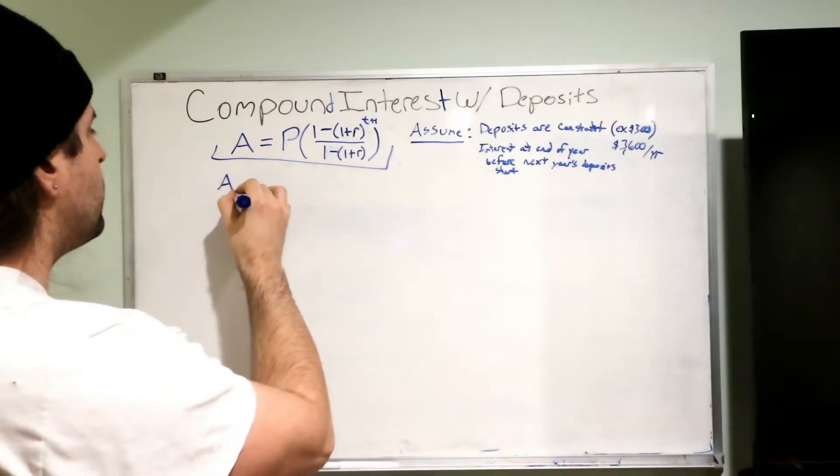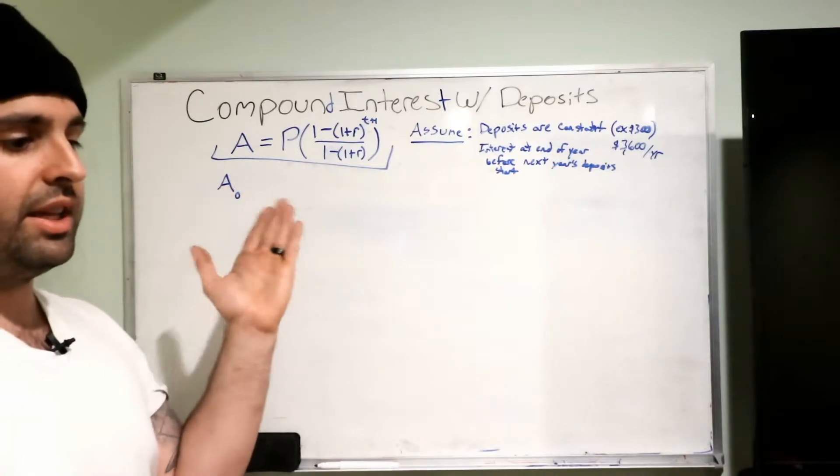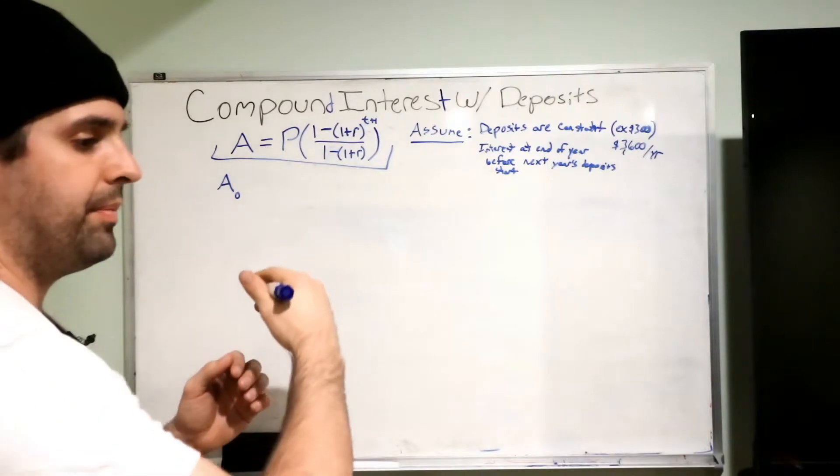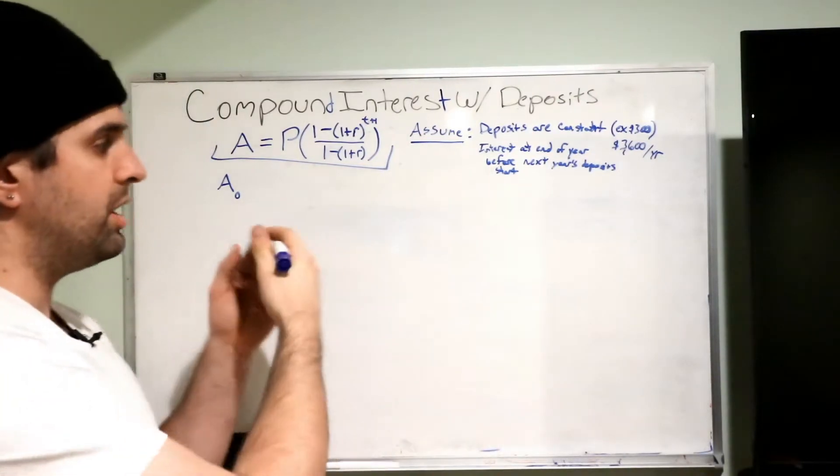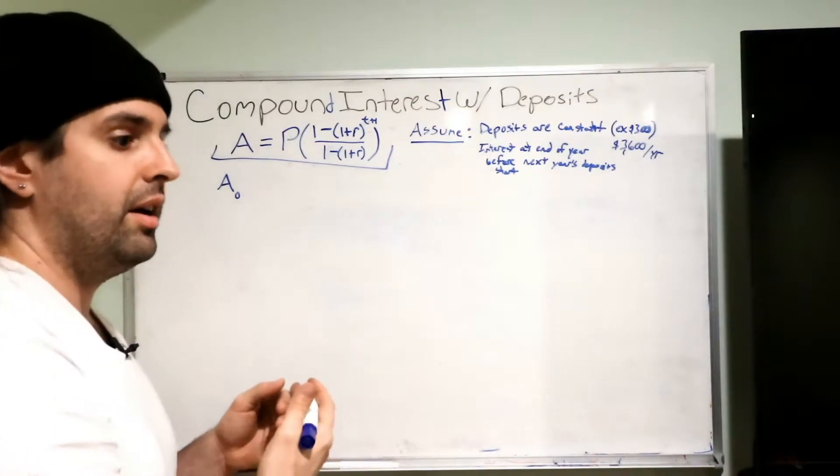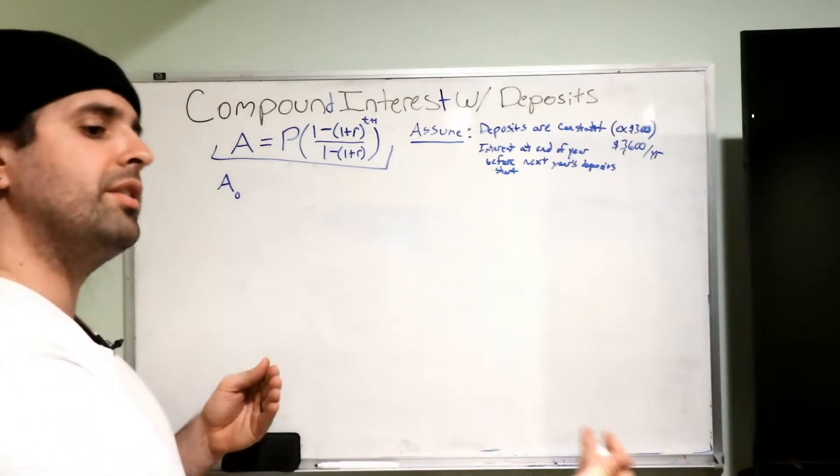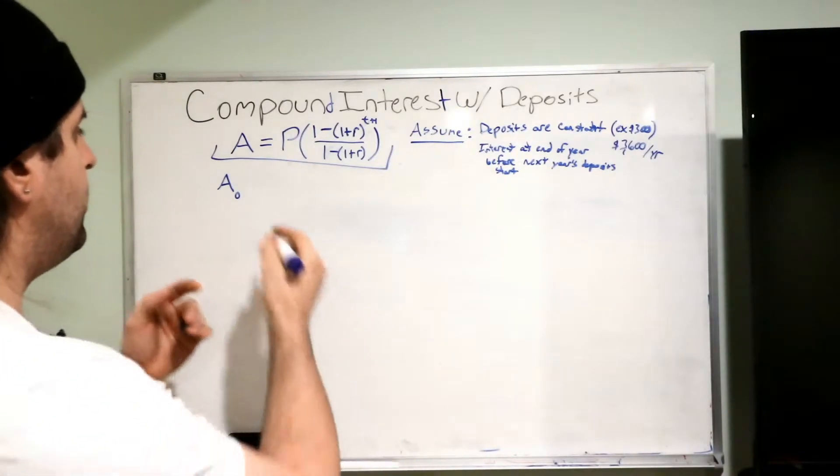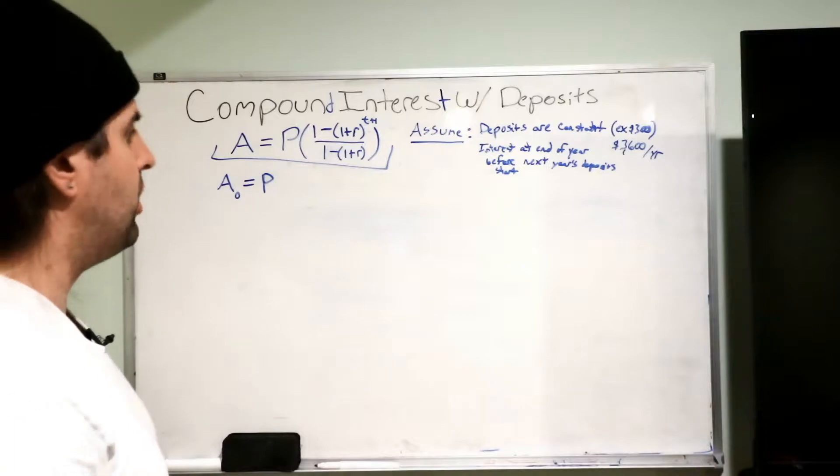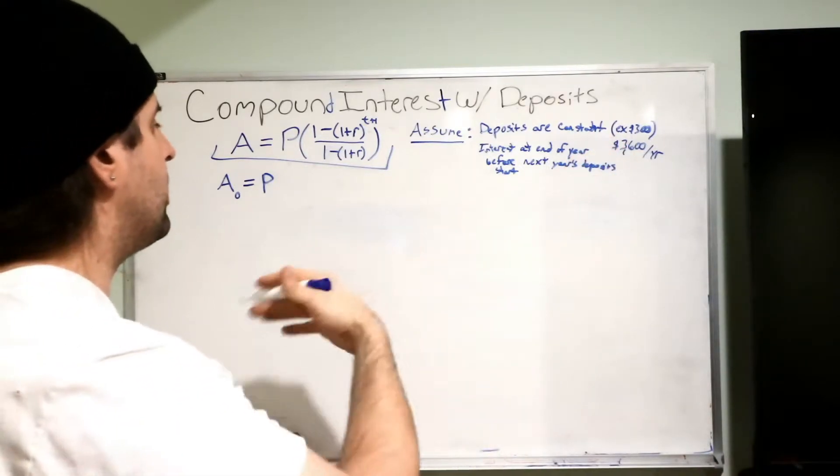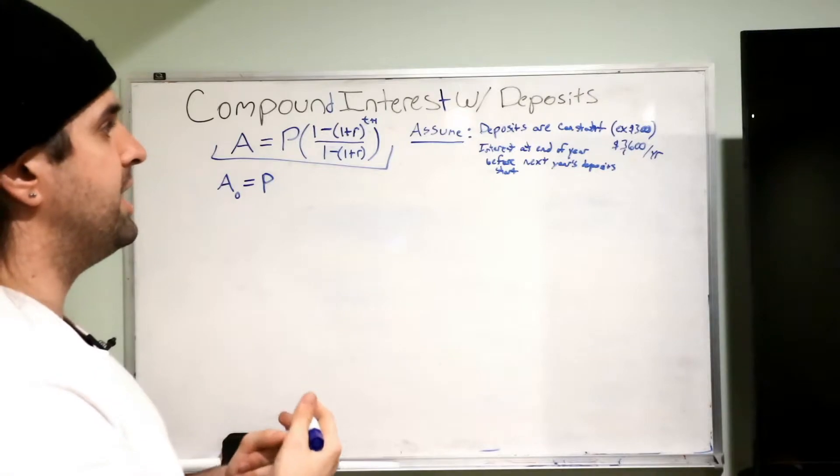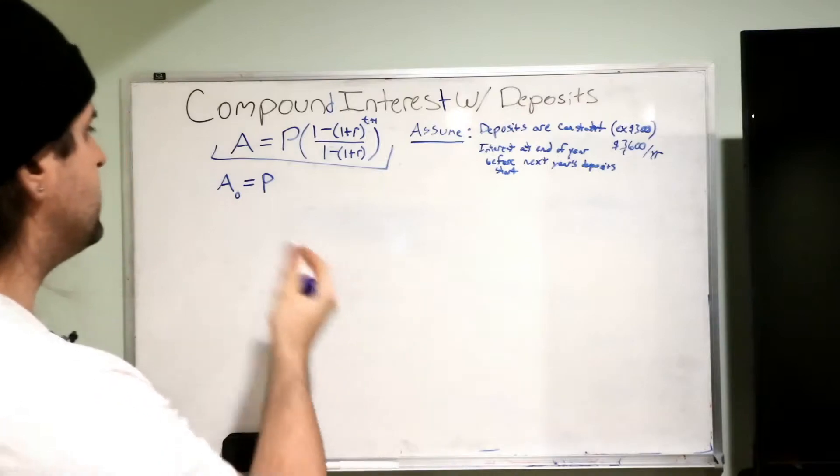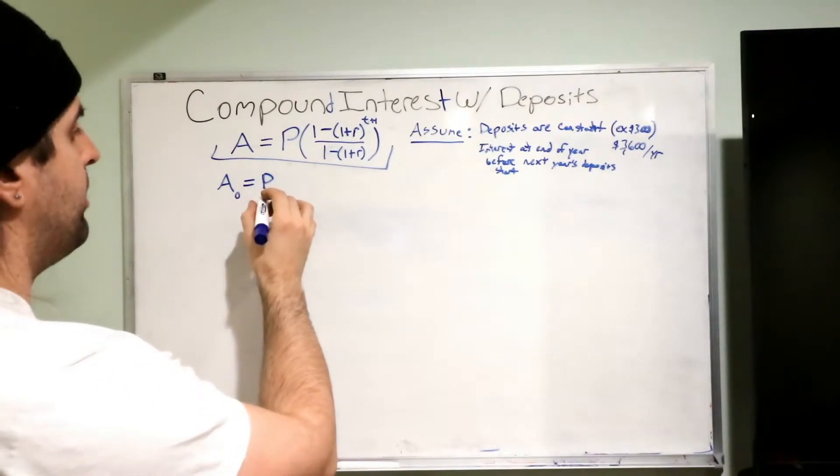So the A's are going to stand for the year. So at the end of the year how much money do you have, and the sequence of events is going to be you're going to deposit money every single month through the whole year. At the end of the year then you're going to get paid on the interest on all those deposits. Okay, so the first year you're depositing all your money. We're calling it P. Like I said, if it's $300 a month doesn't matter, $3600 a year, because the compound the interest is only going to be paid one time per year. So the first year, boom, you have all that money.